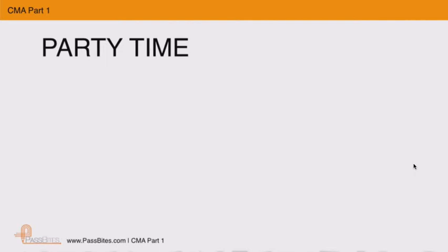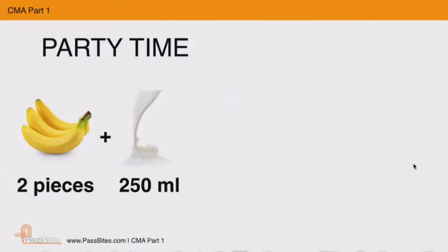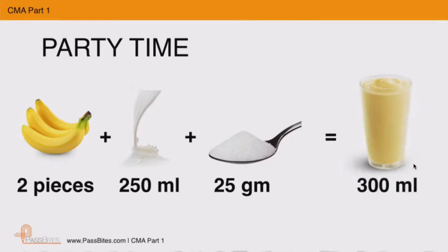Assume that we have a party to be arranged and we need to arrange beverages. For this example, I'm using a banana milkshake example. Let's assume we need to serve each guest a banana milkshake, and each milkshake will require two bananas, 250 ml of milk, and about 25 grams of sugar — giving a 300 ml serving of banana milkshake.